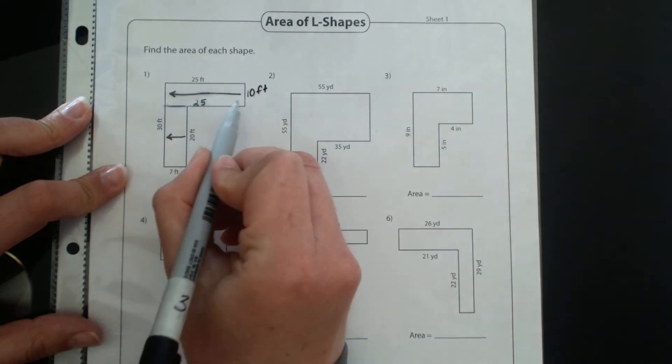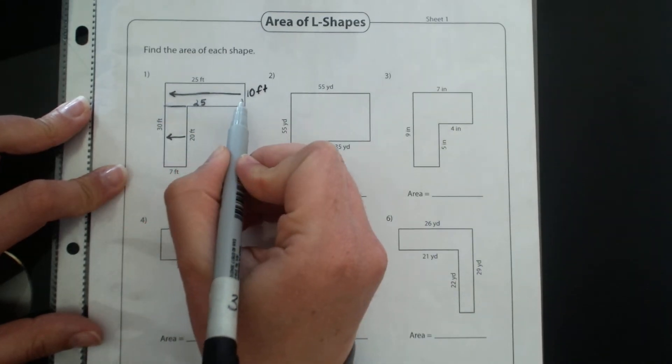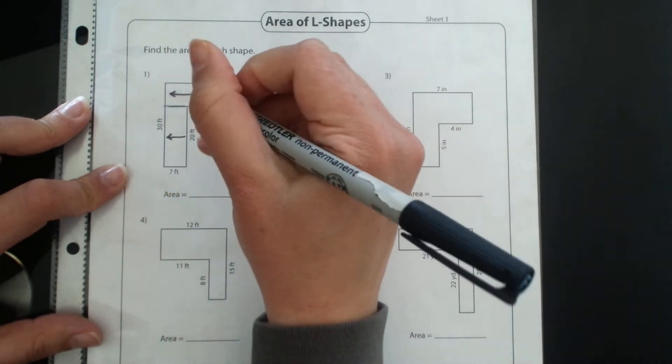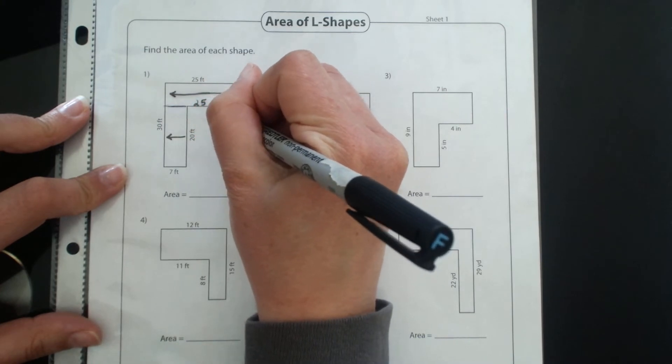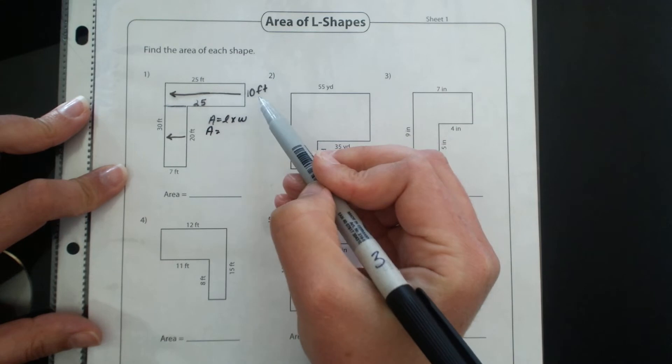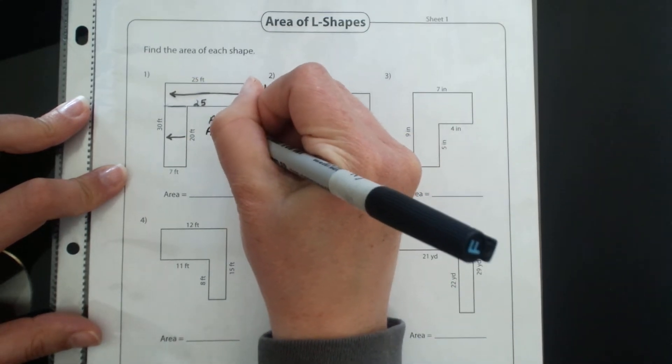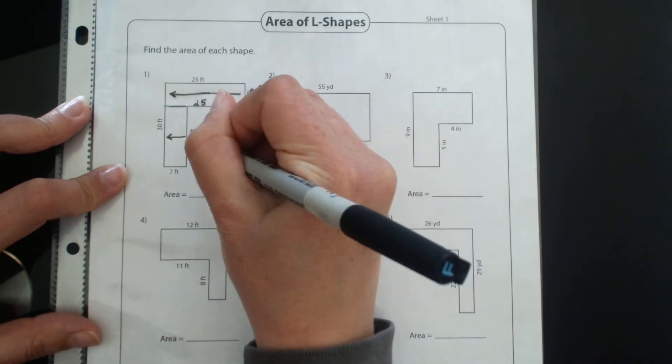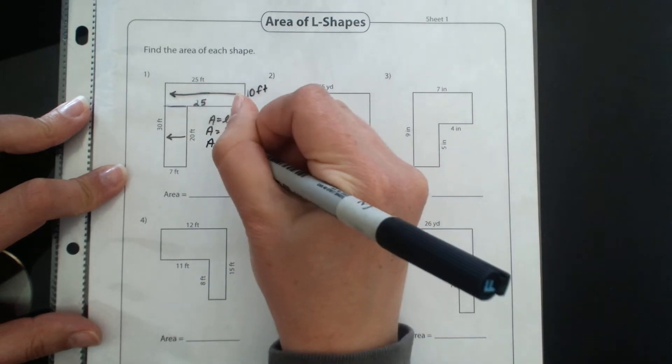And now I'm ready to actually calculate the area of that top rectangle. So area equals length times width, and area equals 25 times 10, and area equals 250.